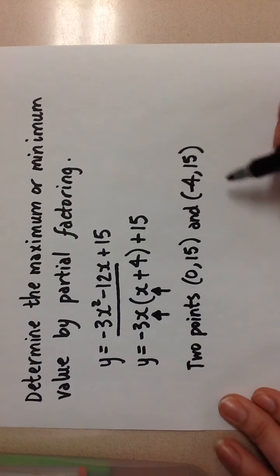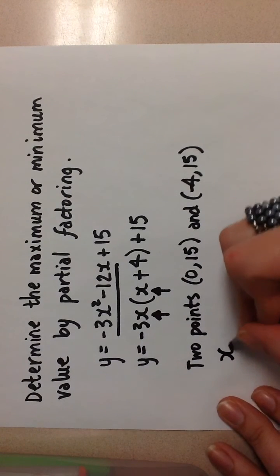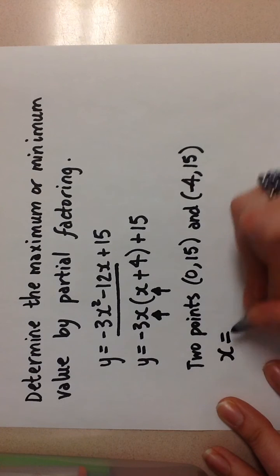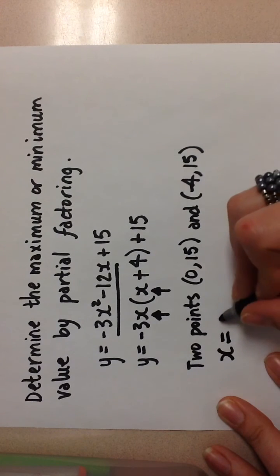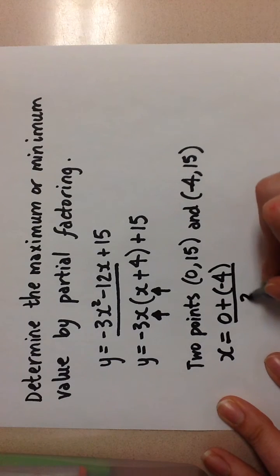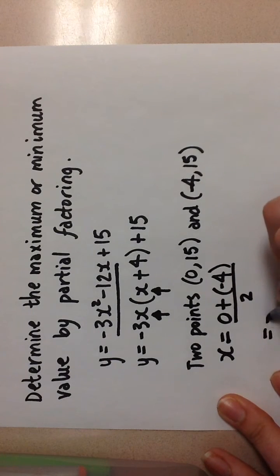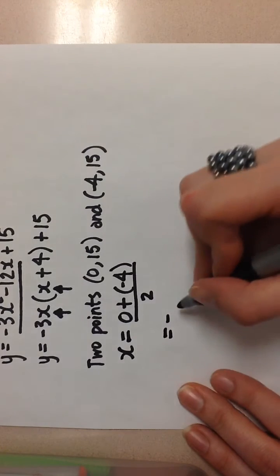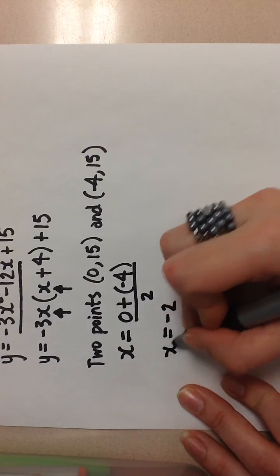know these two points are symmetrical, I'm going to find the axis of symmetry by adding the two x values together and dividing by 2. When I do that, my axis of symmetry will be at x = -2.